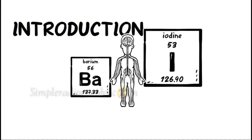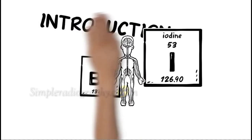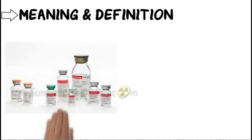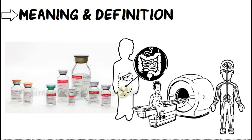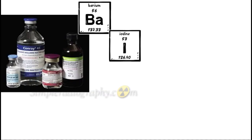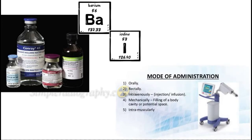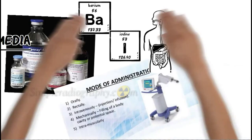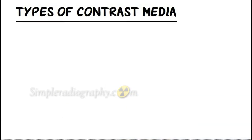Introduction to contrast media: meaning and definition. Contrast media are substances used to enhance the visibility of organs in the human body. They are also called contrast agents — chemical substances that can be administered into the human body to give better tissue differentiation.